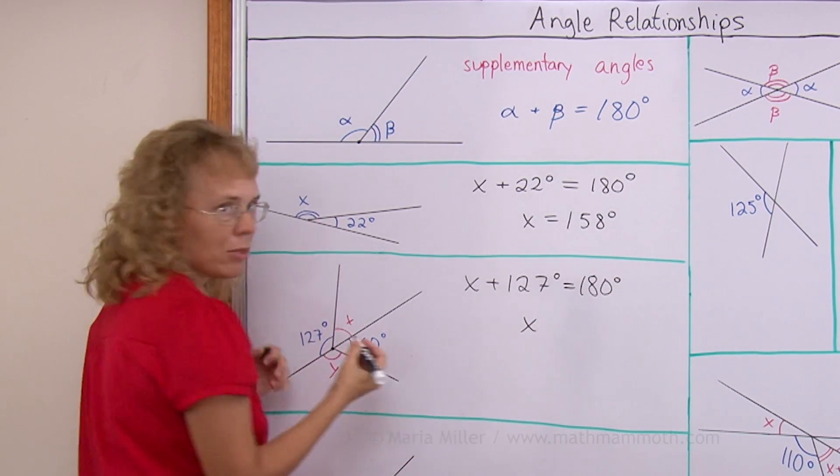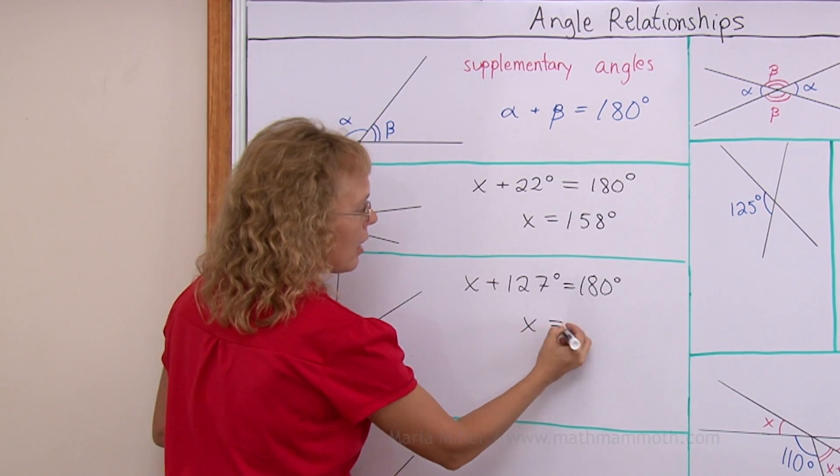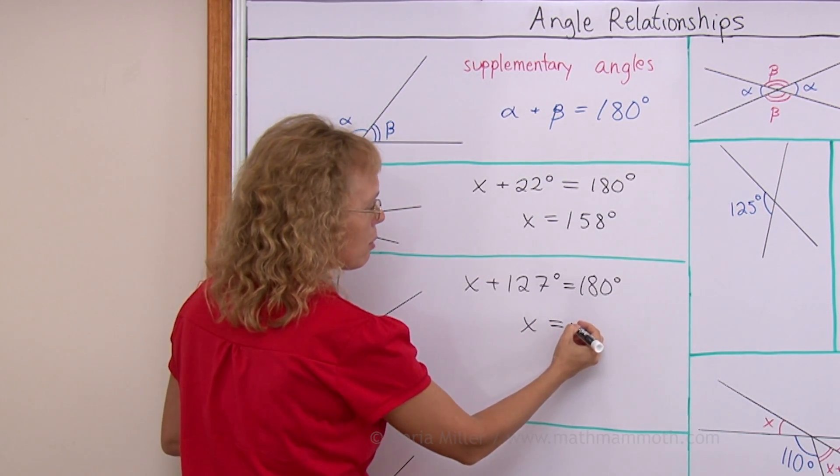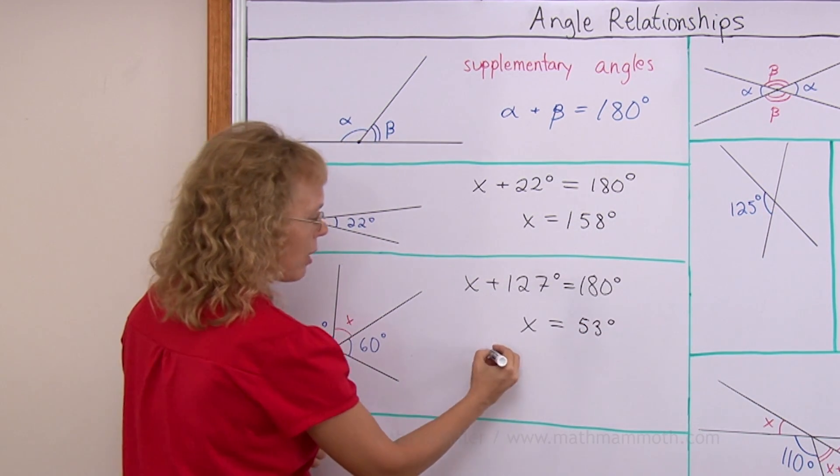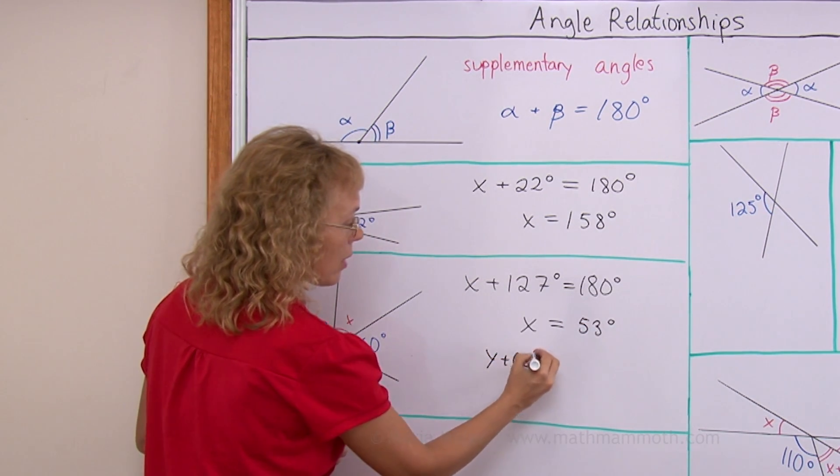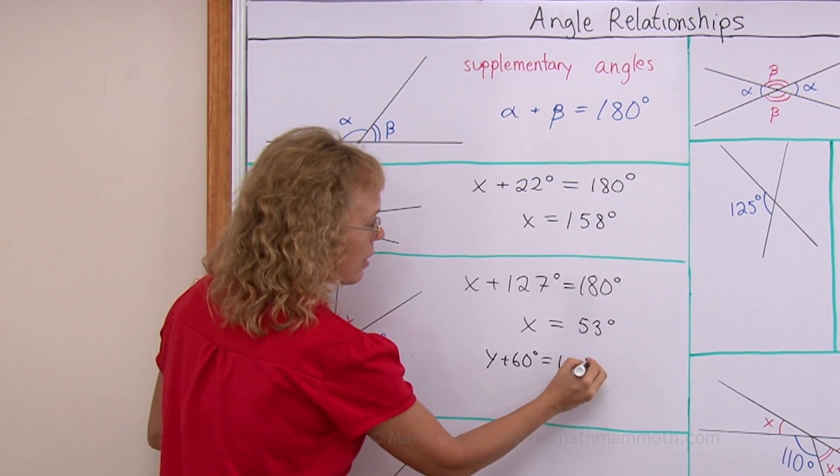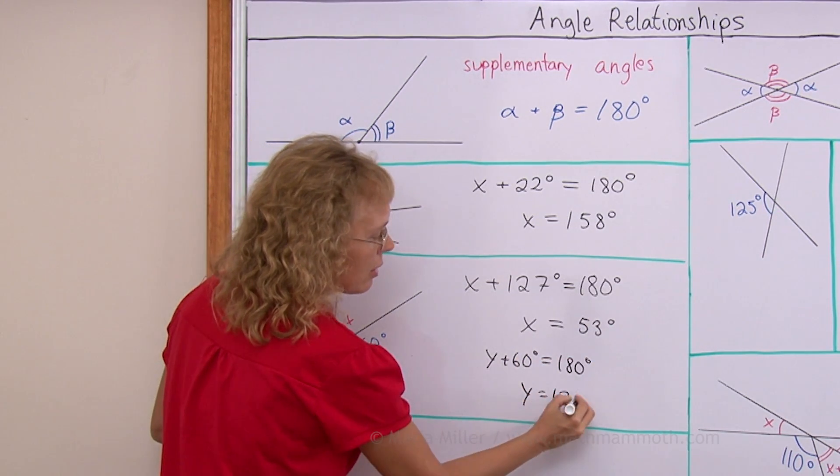Again you would subtract to solve it and we will get X equals 53 degrees. The same for Y. We have Y plus 60 equals 180 and Y equals 120 degrees.